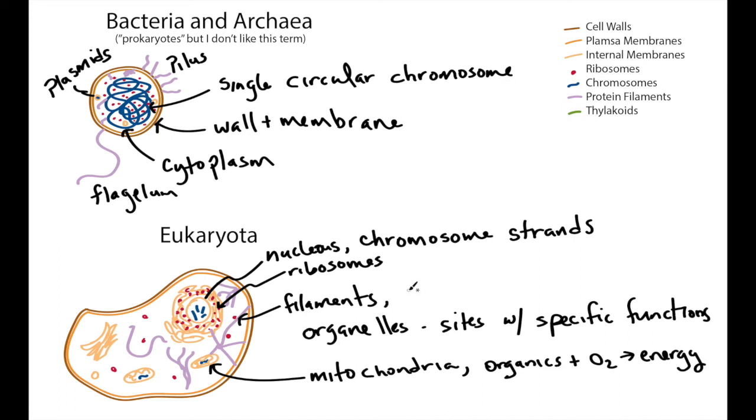In eukaryotes, they also have little molecular motors that can track along some of these filaments. And these motors help deliver different enzymes, different compounds to different places in the cell where they're actually needed.